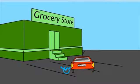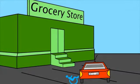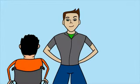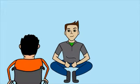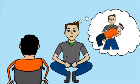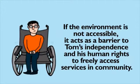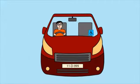When Tom finally gets to the grocery store, he finds there is no wheelchair accessible ramp — only stairs to get into the store. A person walking into the store notices Tom's dilemma. They squat down and offer to find help to carry Tom up the stairs. Although this gesture is well intended, from Tom's perspective it can come across as a little bit condescending and degrading. Tom knows people mean well, but it is frustrating to find no accessible ramps in public places. If the environment is not accessible, it acts as a barrier to Tom's independence and his human right to freely access services in the community. So politely, Tom declines the offer and decides to go home instead.